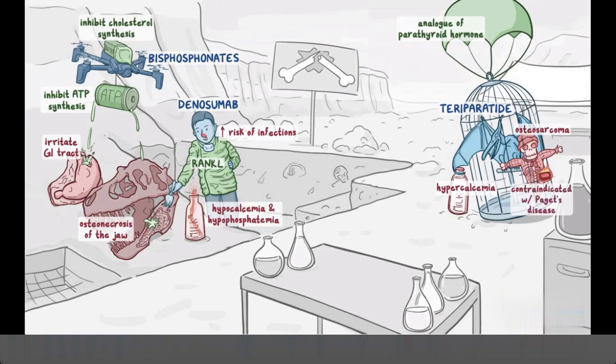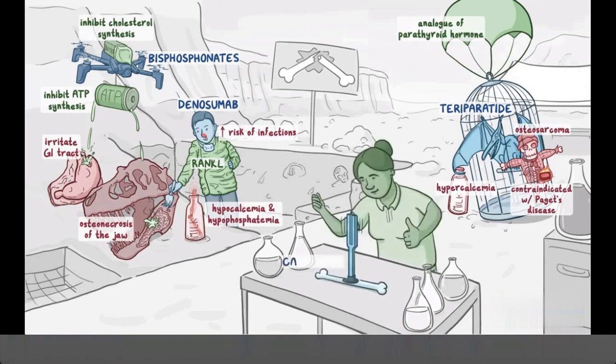Okay, moving on to calcitonin. Since calcitonin tones the bones, we'll have a researcher testing bone conduction with a giant tuning fork. Finally we have raloxifene, which will be represented by a researcher wearing a large counterfeit watch that says Ralox. Now she's the only woman researcher on the team, and this will help you remember raloxifene targets estrogen receptors. For side effects, she's fanning herself because she has hot flashes, and she's giving a friendly thumbs up to the other researchers to represent venous thrombosis.